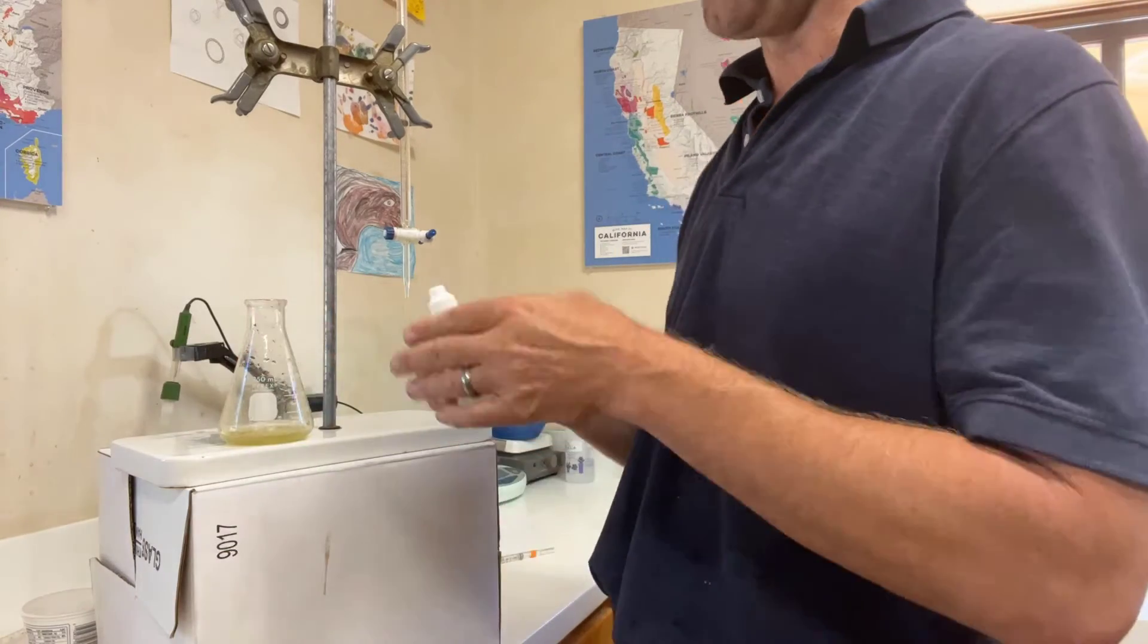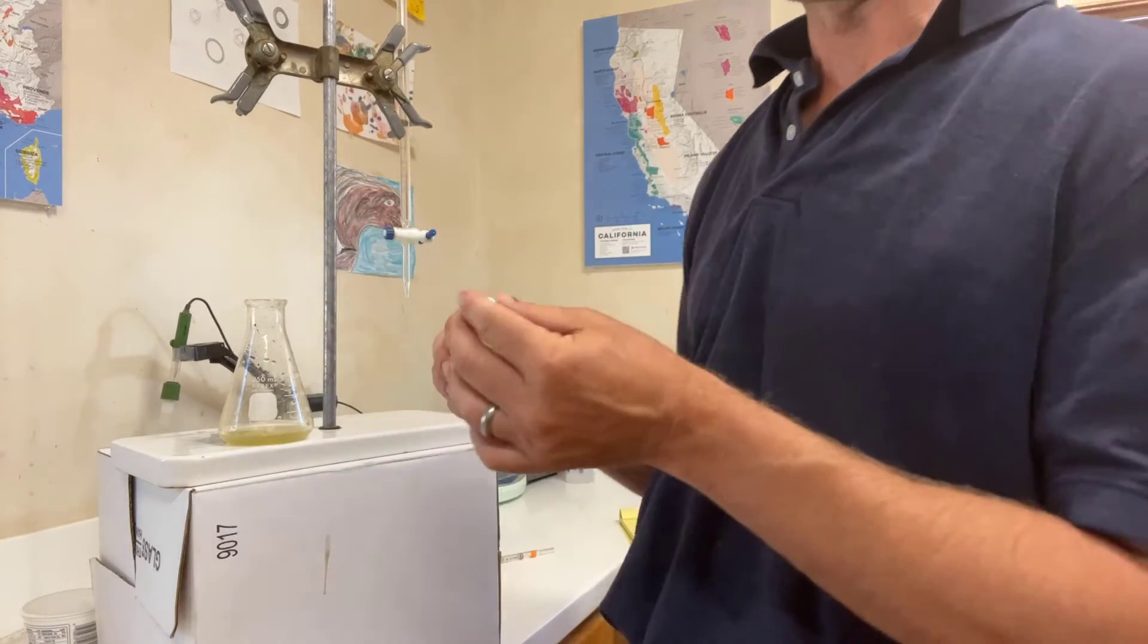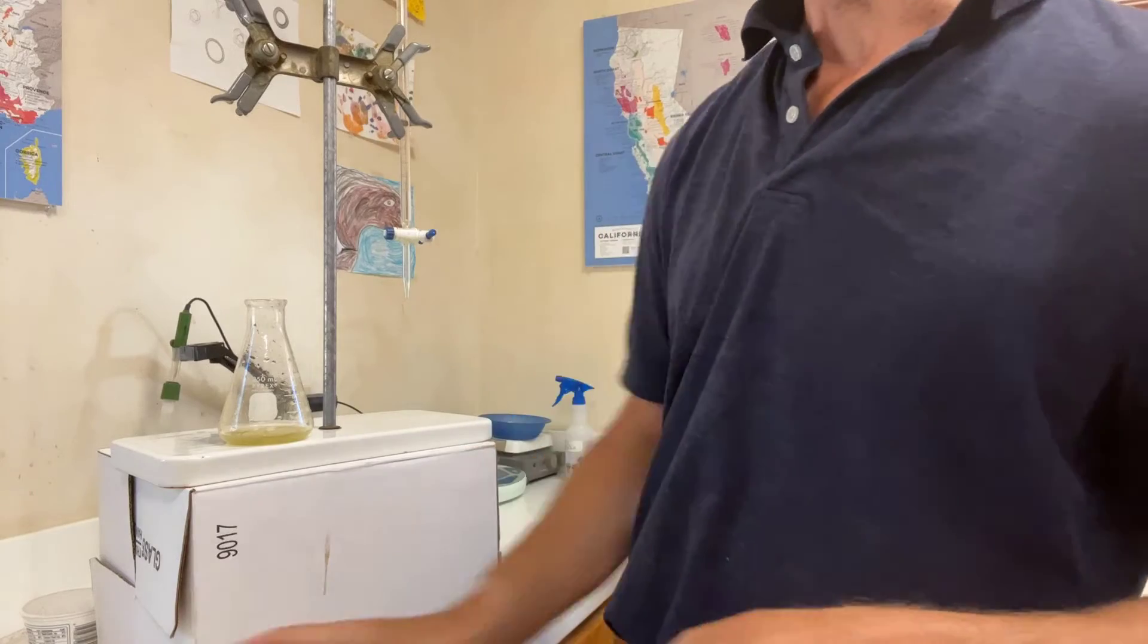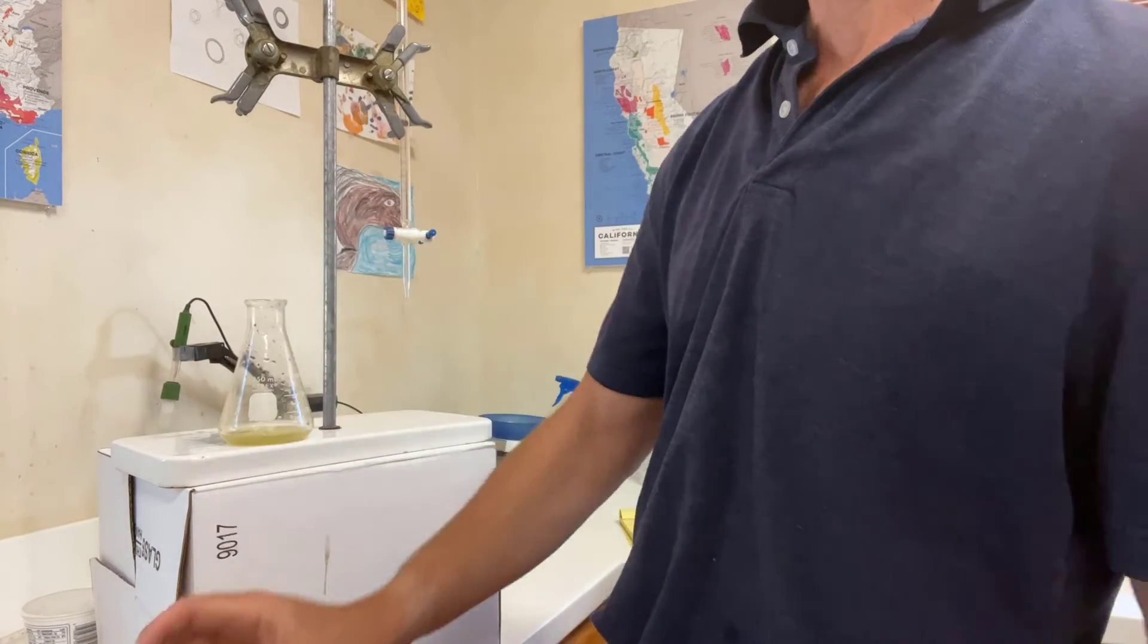A couple drops of this phenolphthalein indicator. It's going to turn pink when the pH gets to 8.2. That's the endpoint. I know from prior measurements this juice is starting at a pH of about 2.9, quite unripe.